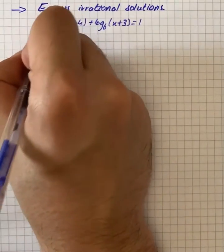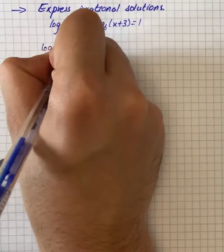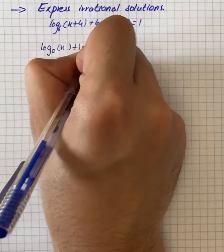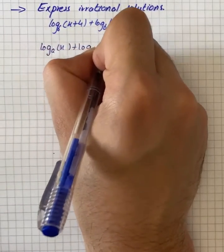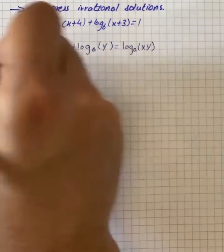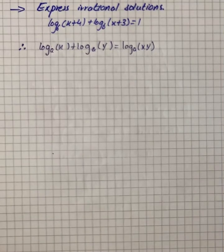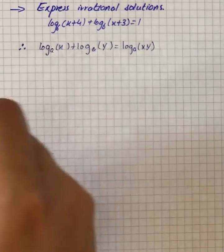We can write that log_a(x) + log_a(y) is equal to log_a(xy). That is the formula or concept that we're going to use, so the value of the function is log₆ and x plus 1.